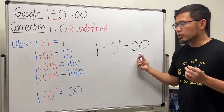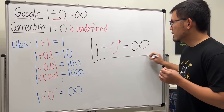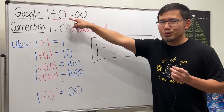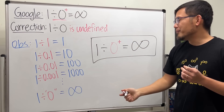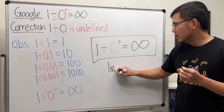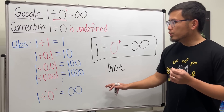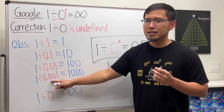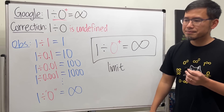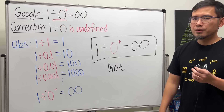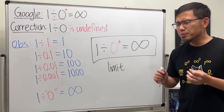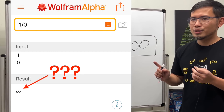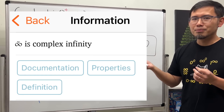If you write this down and say it equals infinity, that's totally fine. What they're doing is calculus — this is called a limit, meaning we're looking at how the result behaves as we keep approaching dividing by zero. Google gives infinity for the answer. Wolfram Alpha gives infinity too, but with a label on top: complex infinity.